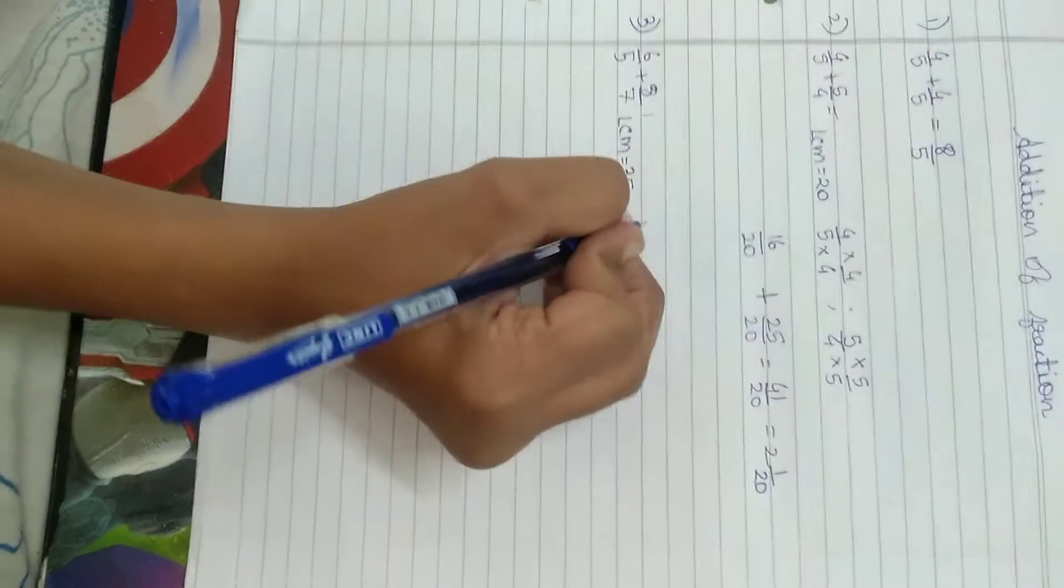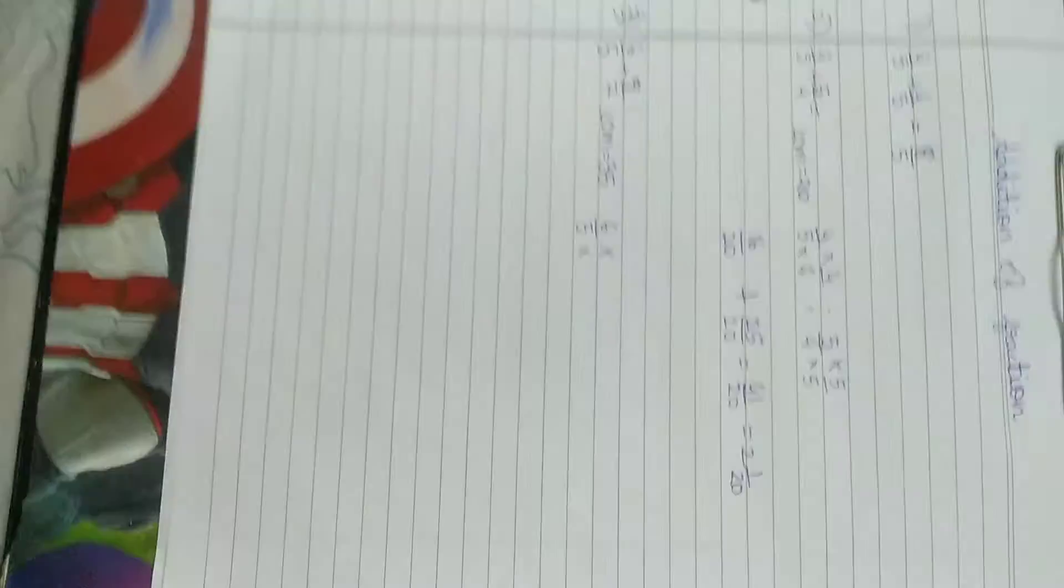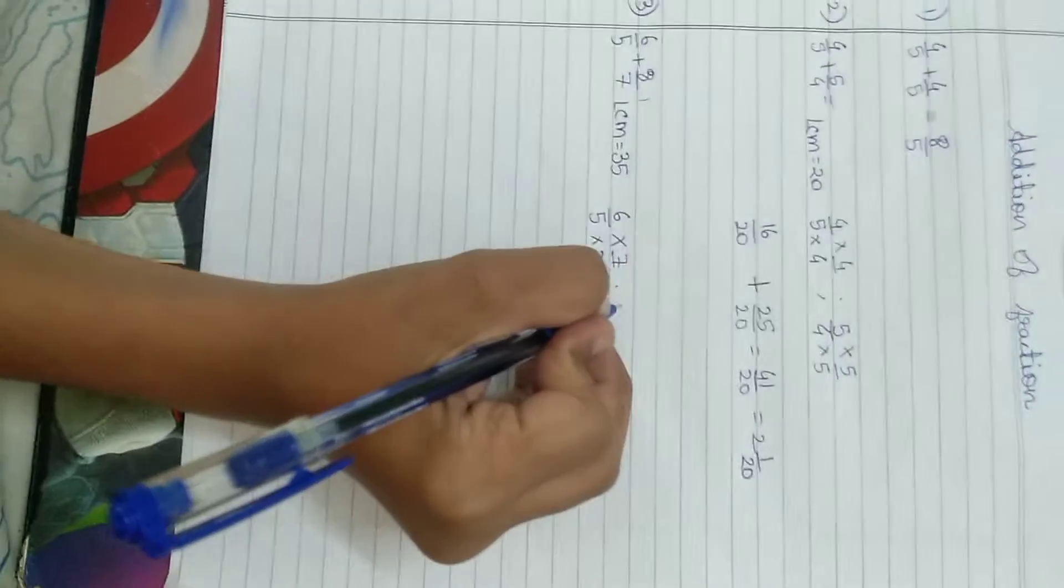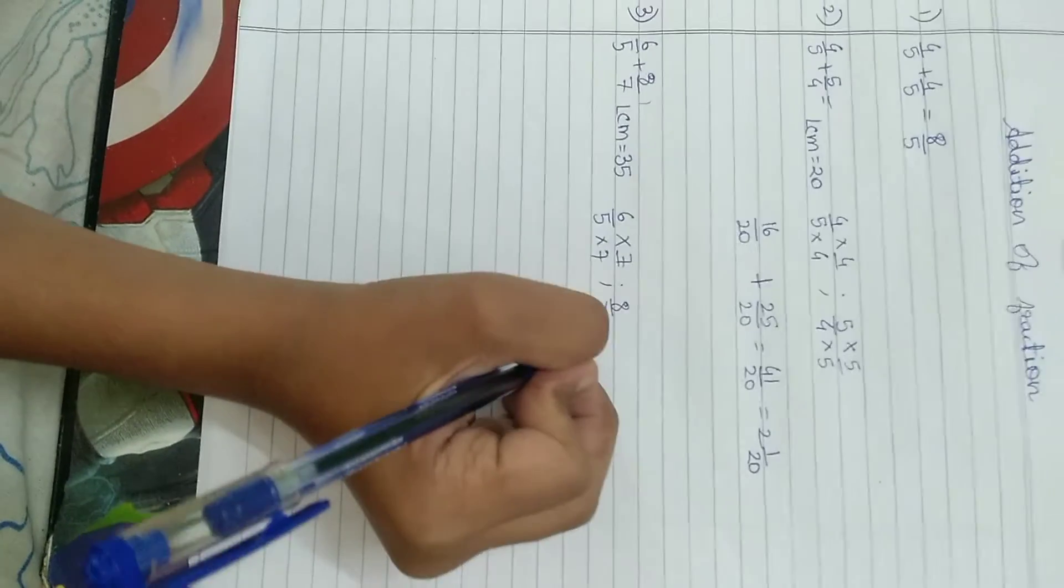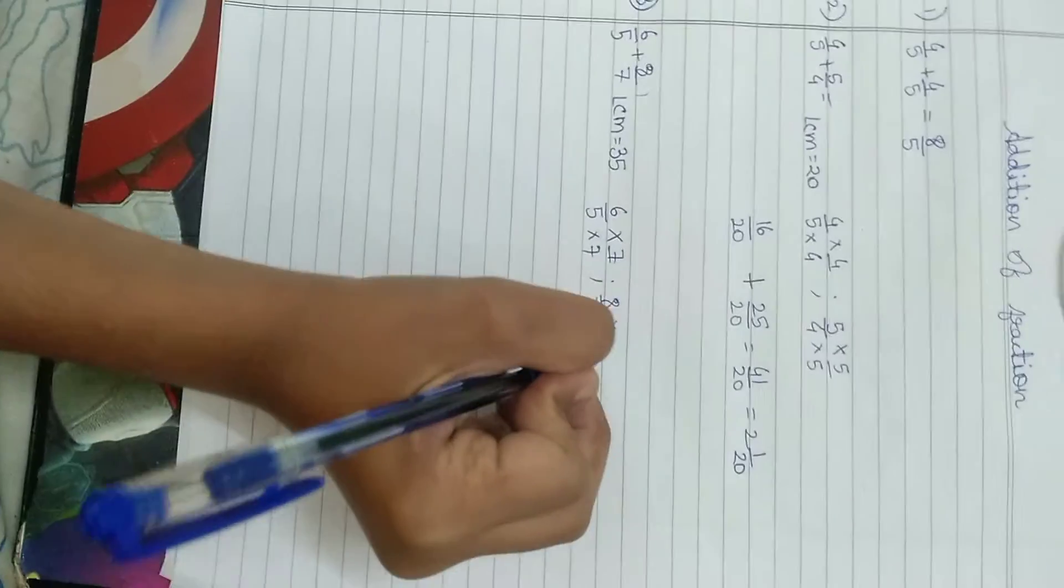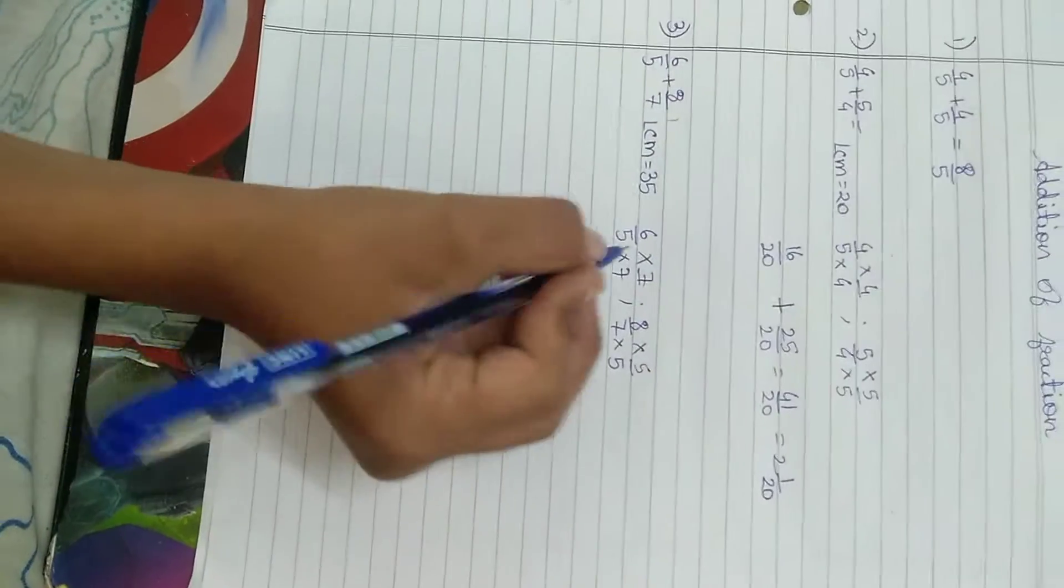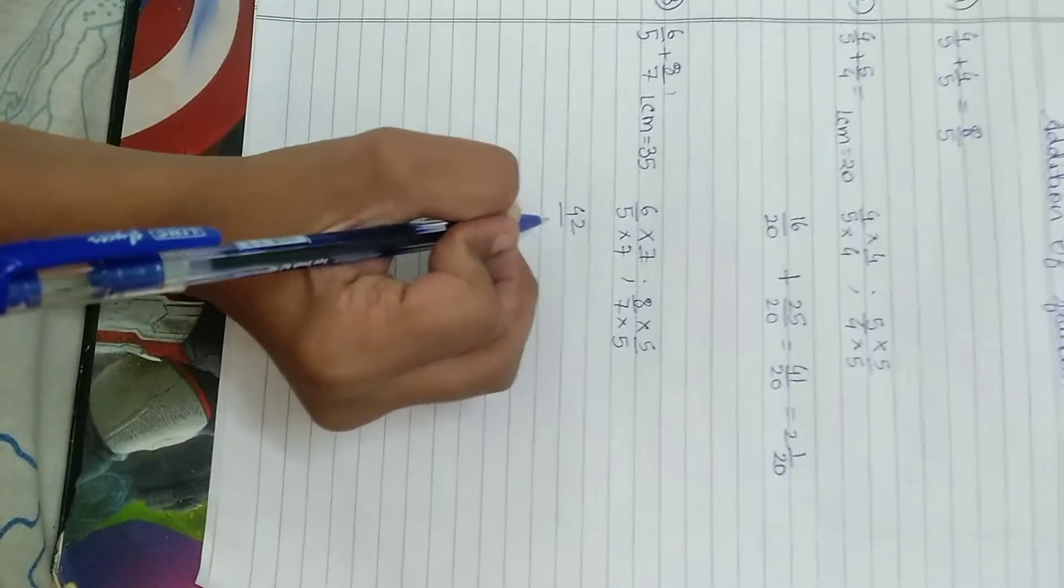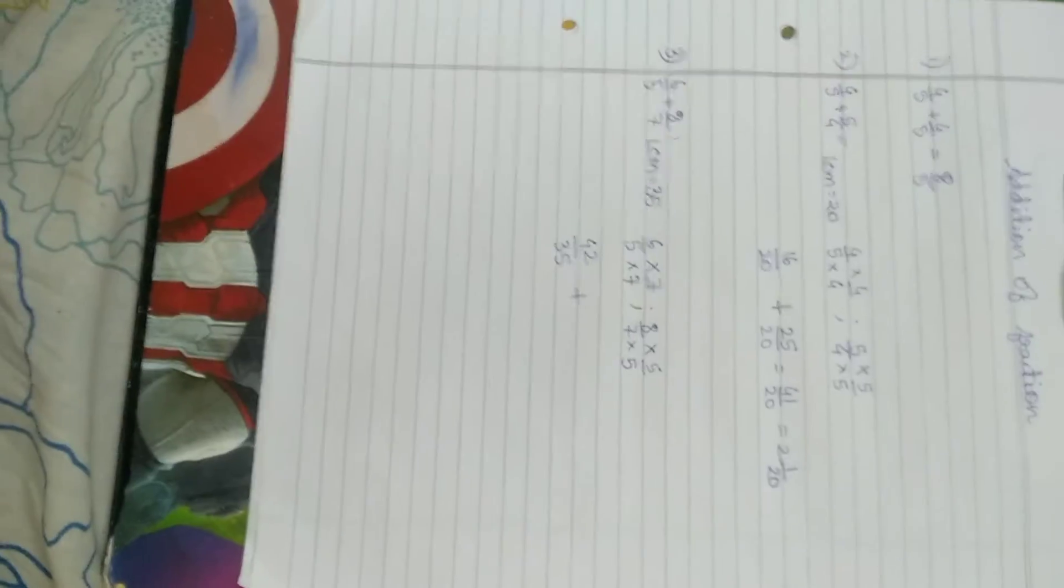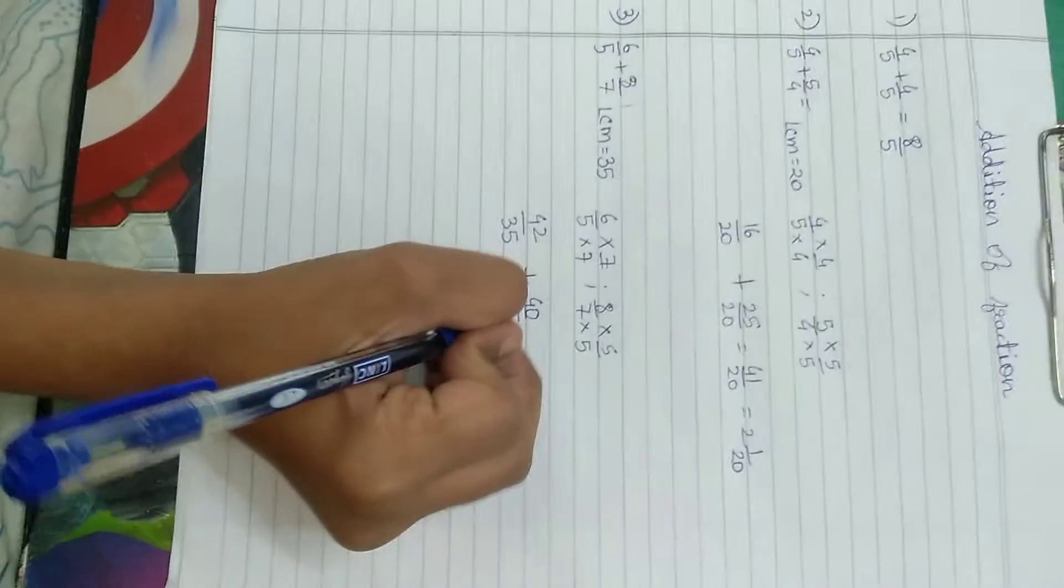Now 6 by 5 plus 8 by 7. The LCM of 5 and 7 is 35. We will multiply it. 5 times what equals 35? 7. So we will multiply by 7 by 7. Now 8 by 7, 7 times what equals 35? 5. So we will multiply it by 5 by 5. Now 6 times 7 is 42, 42 by 35 plus 8 times 5 is 40, 40 by 35. I will add it.